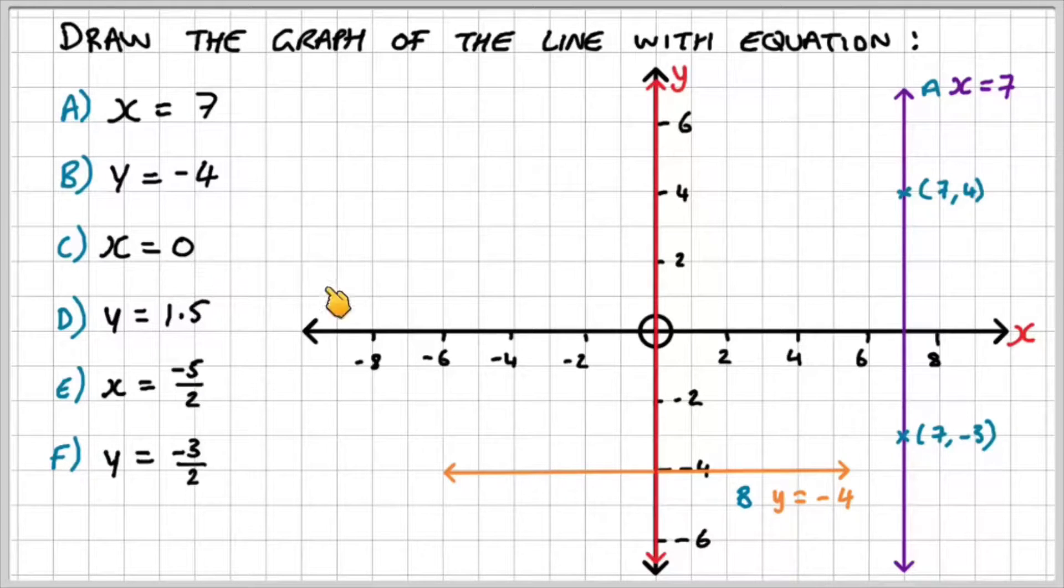So part c might be a tricky one. You can just about see it's actually on the y-axis. If I choose a random point here, 0, 5, you can see that the x-coordinate is 0. So if I choose another random point, 0, minus 3, you can see that x is 0. So at any point on this line, x is always equal to 0.